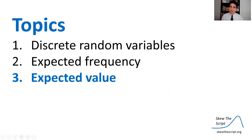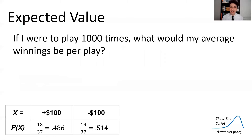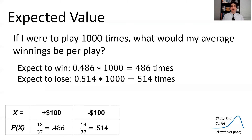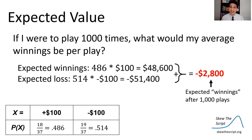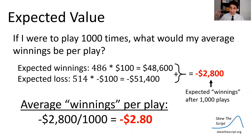Now let's move from expected frequency to expected value — the expected winnings or losses from a game. If I play 1,000 times, I expect to win 486 times and lose 514 times. Multiplying: 486 wins times $100 gives $48,600 in winnings, but 514 losses times $100 gives $51,400 in losses. Combined, that's a net loss of $2,800, so the average winnings per play — dividing by 1,000 — is about $2.80 lost.